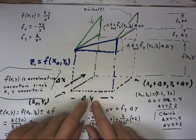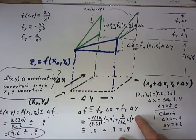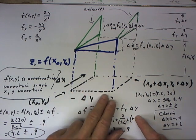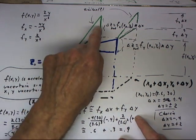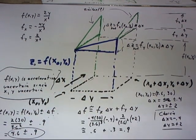We've chosen to move in the negative x direction and the positive y direction because those are the directions that will both give us positive changes in our function value, positive changes in our z value.